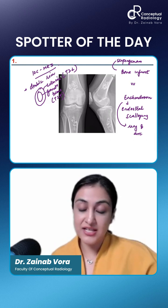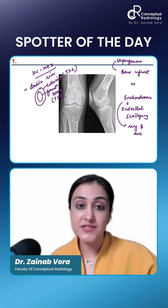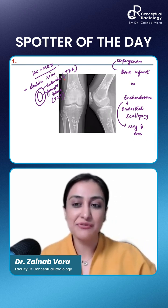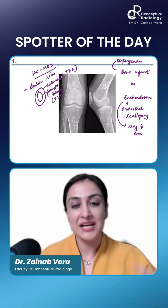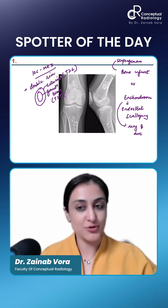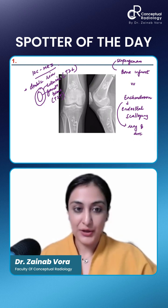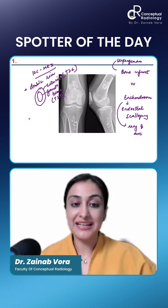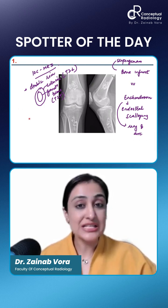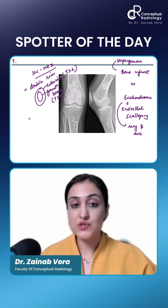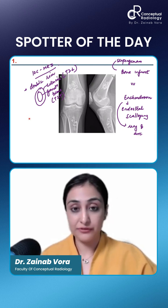Today we are just discussing the spotters directly, not doing it as a Google form quiz, just directly discussing to save time. This is what you need to remember: inner hyper-intense, outer hypo-intense — this is bone infarcts.